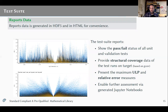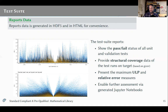The reports show always the pass-fail status of all unit and validation tests. They provide all the structural coverage information based on GCOV, they present the maximum ULP errors and also the relative error measurements, and if needed, they enable further assessment of the results via generated Jupyter notebooks. The report results themselves are stored in HDF5 format and in HTML for convenience and better readability.